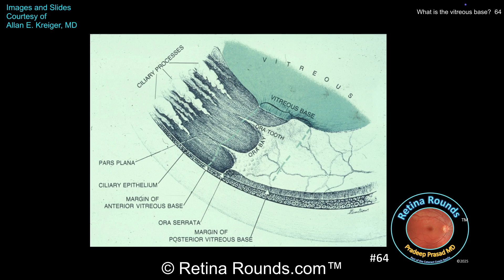This, of course, is the safe access point into the vitreous cavity, which is posterior to the ciliary body and lens, but anterior to the retina. Next, we have the ora serrata, which is the anterior-most extension of the retina. You can see some tooth-like extensions of the retina into the pars plana, which are called dentate processes.